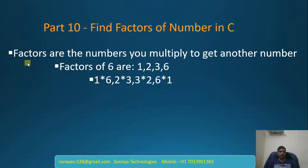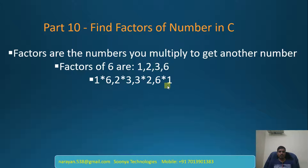What are factors? Factors are numbers you multiply to get another number. For example, if you want to find factors of 6, then 1 into 6 equals 6, 2 into 3 equals 6, 3 into 2 equals 6, and 6 into 1 equals 6.